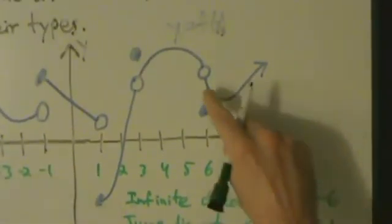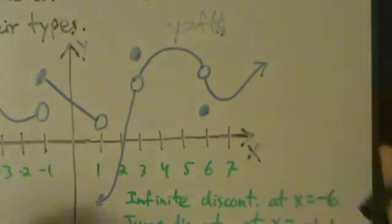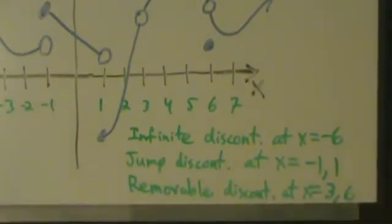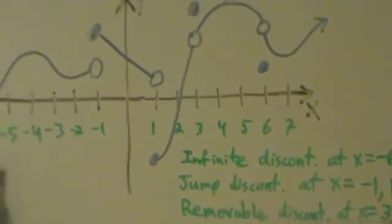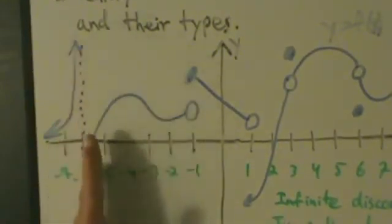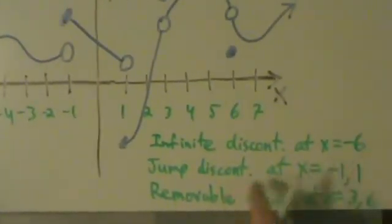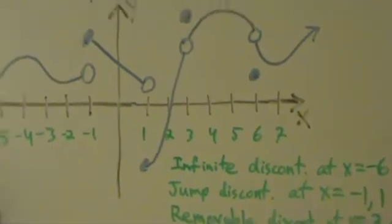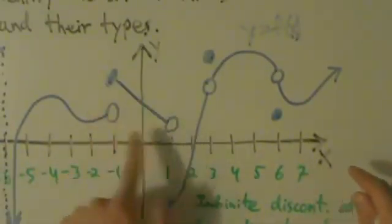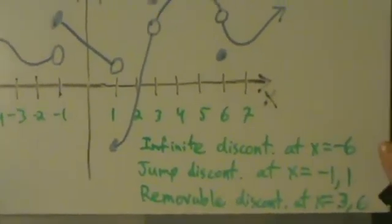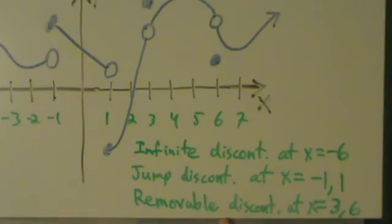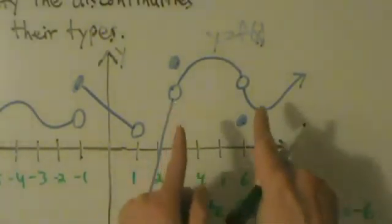Alright, and then continuing after that, everything appears to be fine. So, to summarize, we have an infinite discontinuity at x equals negative 6, with our vertical asymptote here. We have jump discontinuities at x equals negative 1 and 1, as we can see here. Alright? And, lastly, we have two removable discontinuities at x equals 3 and 6, as we can see here and here. Alright?